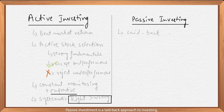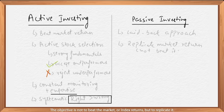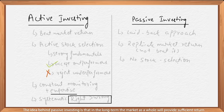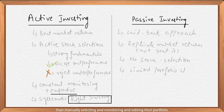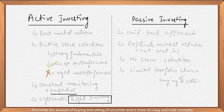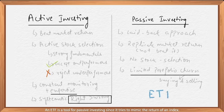Passive investing is a laid-back approach to investing. The objective is not to beat the market or index returns, but to replicate it. The idea behind passive investing is that in the long term, the market as a whole will provide sufficient return, and the investor is better off investing in the entire market than manually selecting, monitoring, and editing their portfolio. This limits the amount of buying and selling of securities and is more of a buy-and-hold mentality. An ETF is a tool for passive investing since it tries to mimic the return of an index.